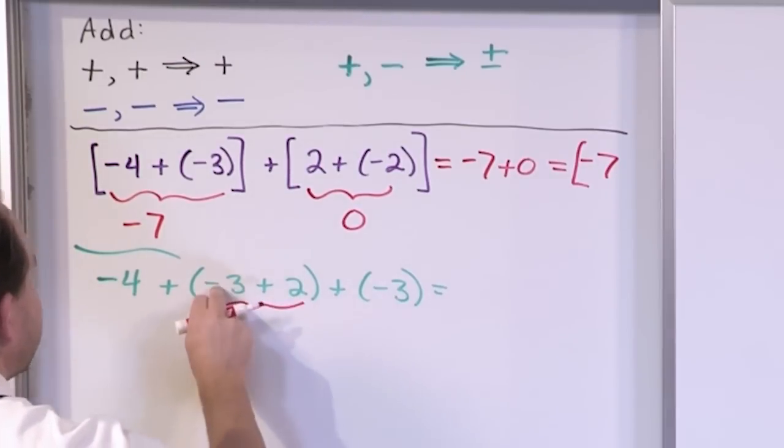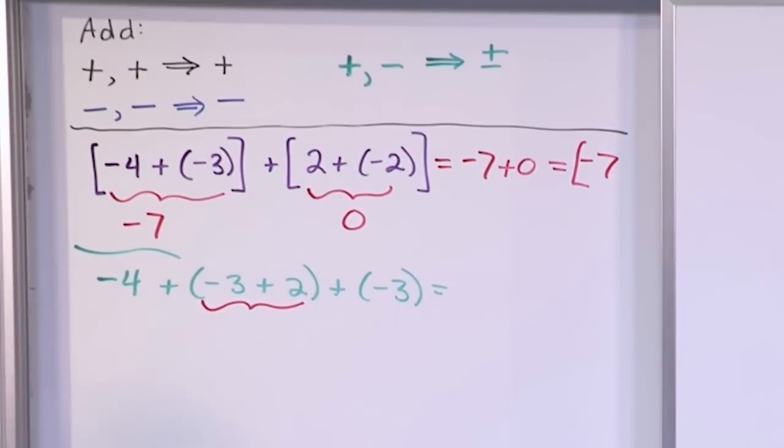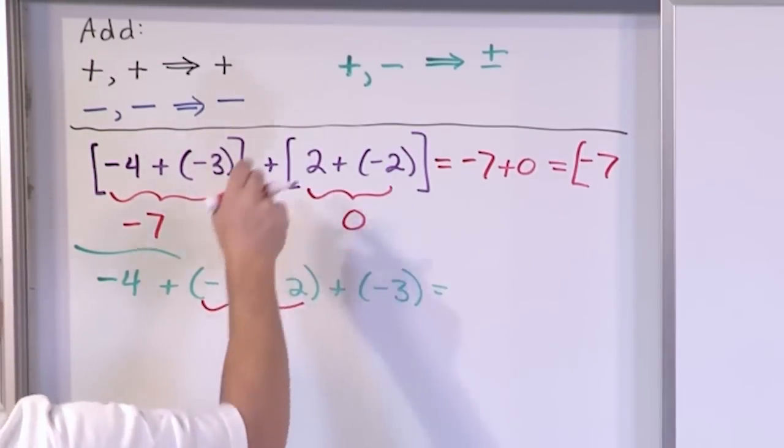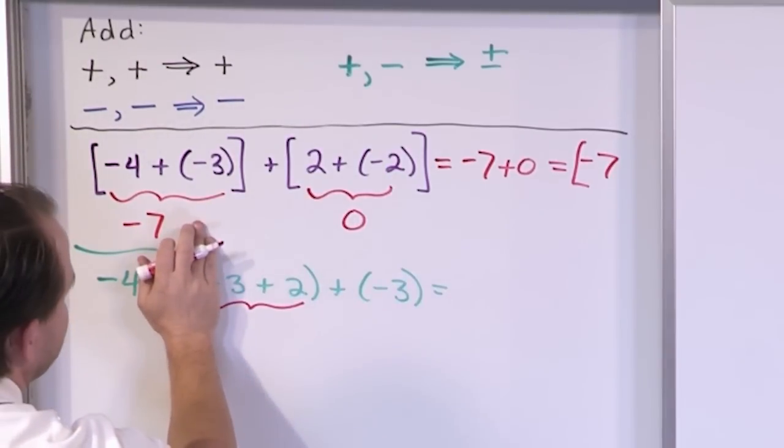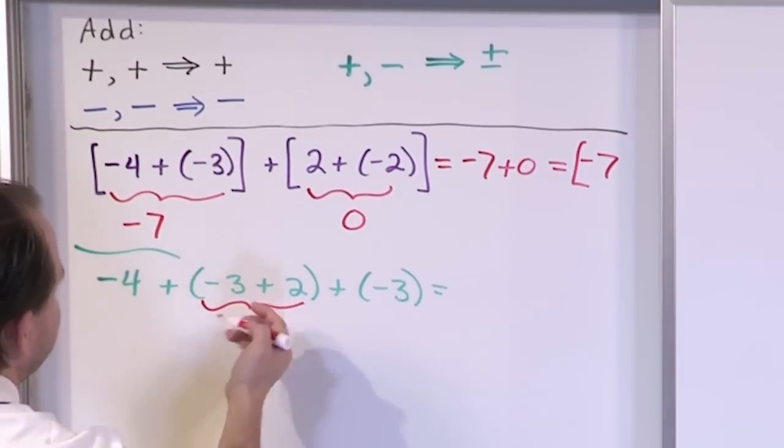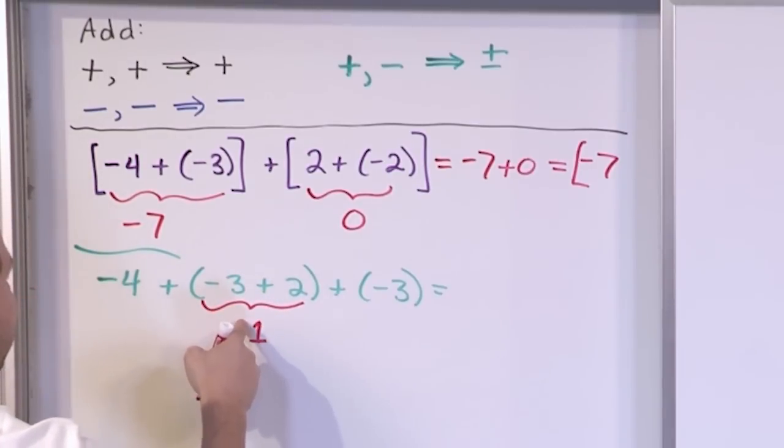So we say negative 3 plus 2. These are different signs, so we have to basically follow this rule over here. We cover up the signs. We have 3 minus 2. We always subtract. 3 minus 2 is 1. And what we get here, the sign of it matches the sign of the larger number. In this case, negative. So we have negative 1 there.